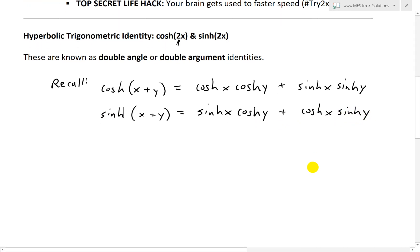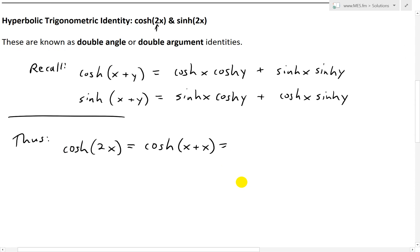So now that we have these identities written down, thus for our cosh, hyperbolic cosine of 2x. This is the same thing as writing it as cosh x plus x. That's just 2x. So we can just plug that inside there. And then we can just plug in, we just replace y with x. So this equals to cosh x, cosh x, like that.